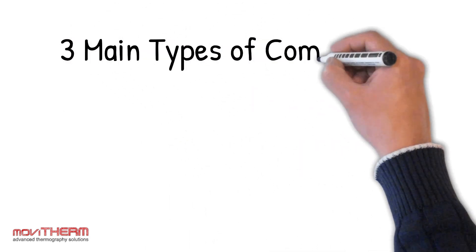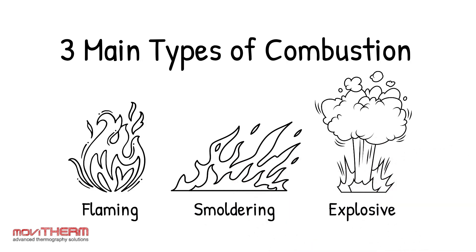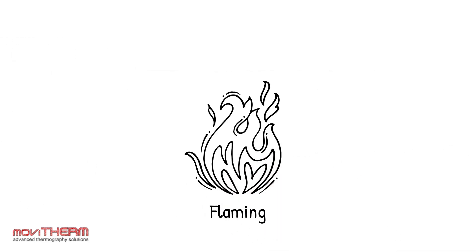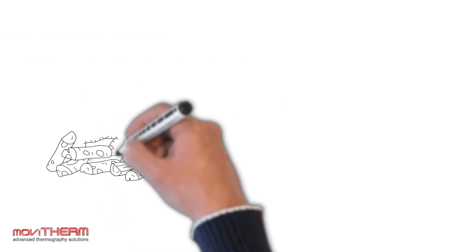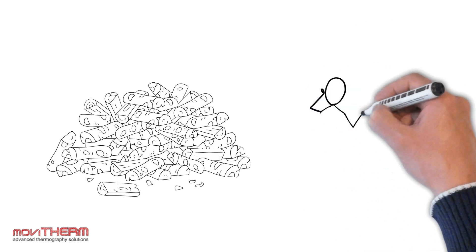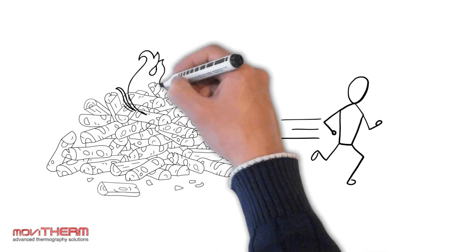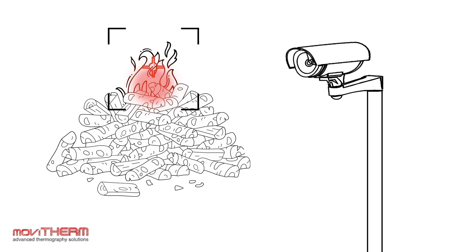There are three main types of combustion: flaming, smoldering, and explosive. Flaming is the most common combustion mode and is characterized by a visible flame. This type of combustion typically occurs when a solid material such as wood, paper, or plastic is heated to its ignition temperature and begins to burn. Early fire detection systems that use infrared cameras can detect the heat as thermal hot spots associated with this type of combustion before ignition occurs and flames become visible.